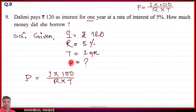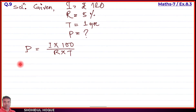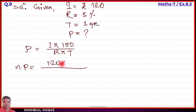To find the principal P, rearrange the formula: P = (I × 100) / (R × T). Apply the values: P = (120 × 100) / (5 × 1). Percent is not written separately here — it's handled in the formula.